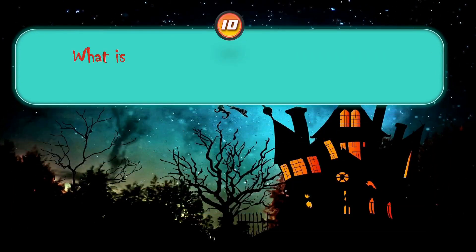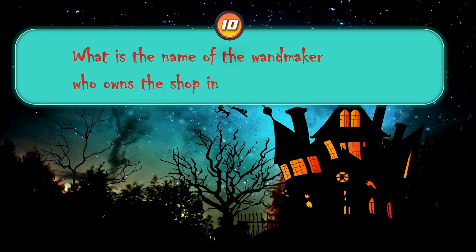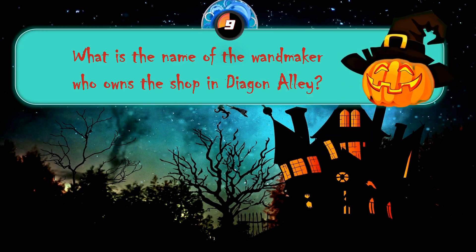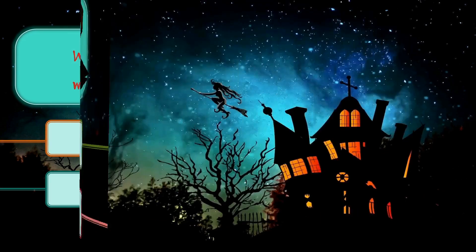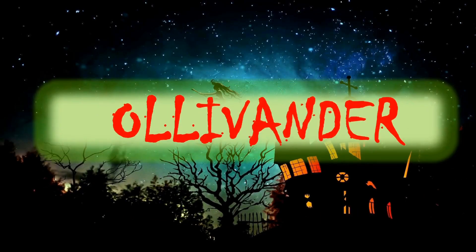What is the name of the wand maker who owns the shop in Diagon Alley? Ollivander, Fortescue, Bolging, Kettleburn. The correct answer is Ollivander.